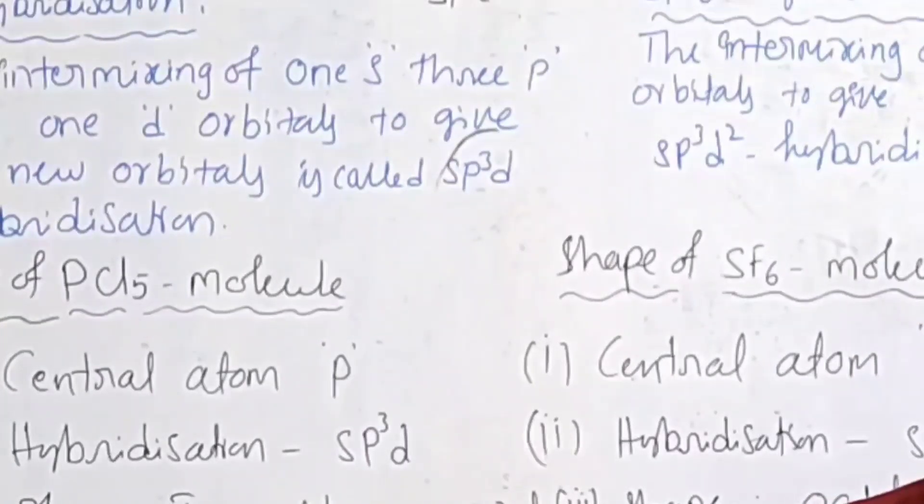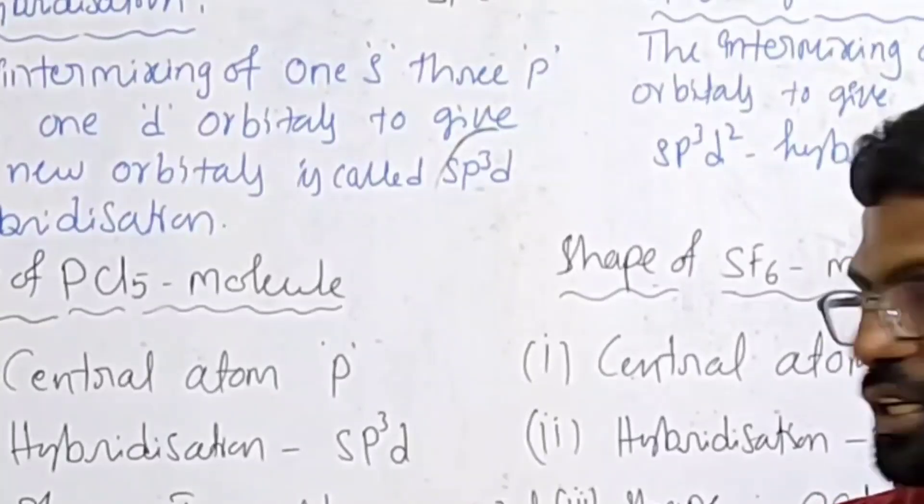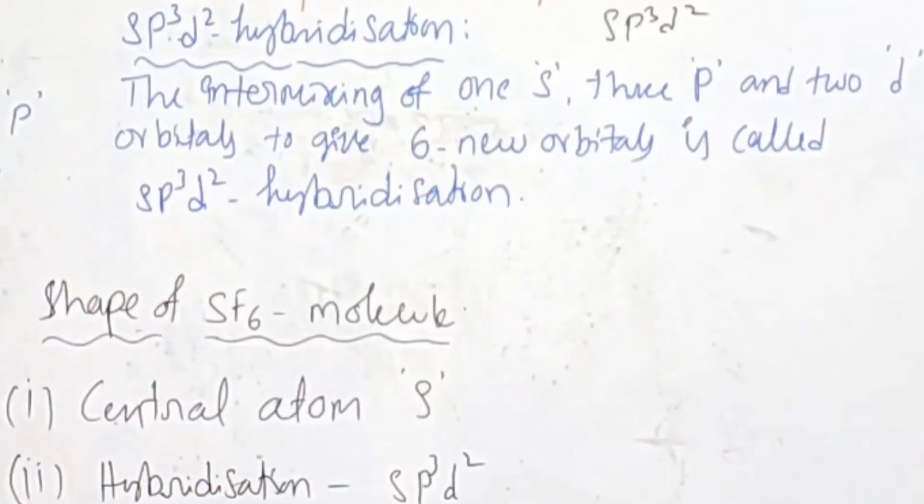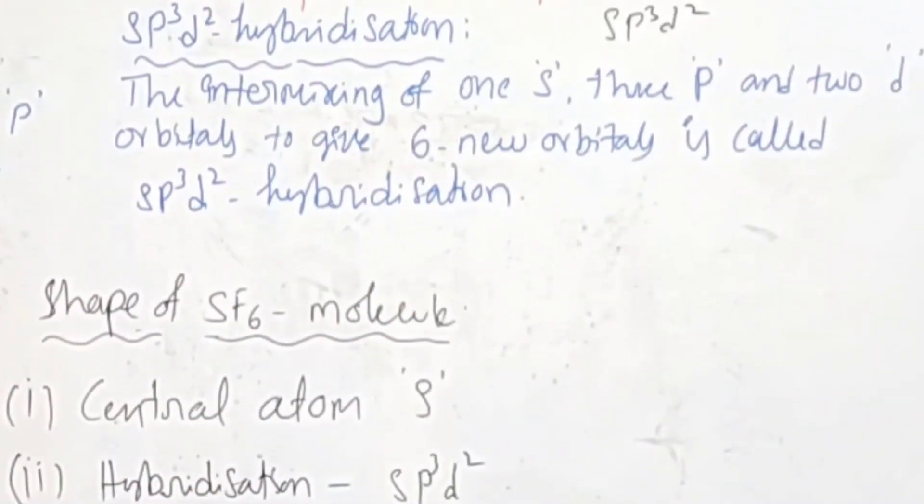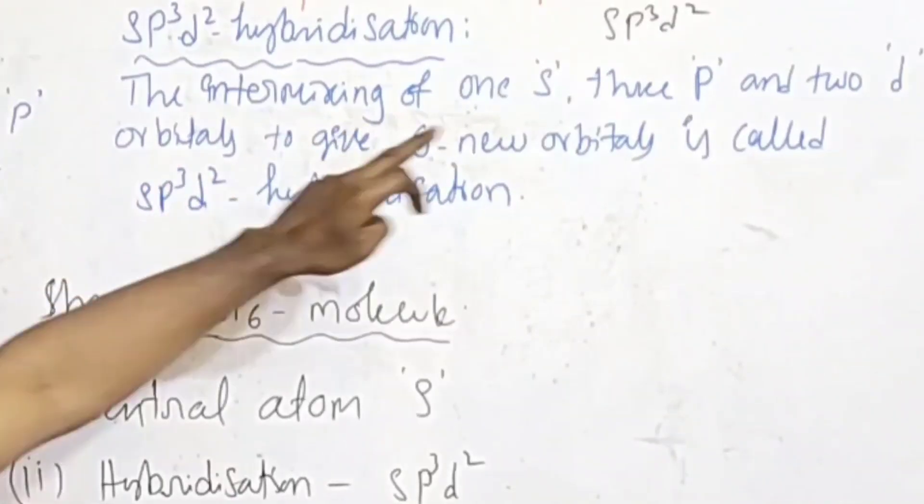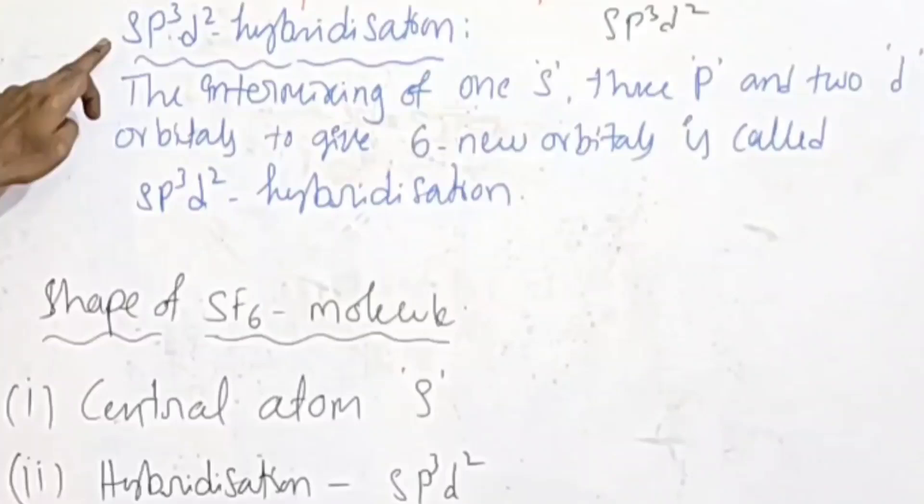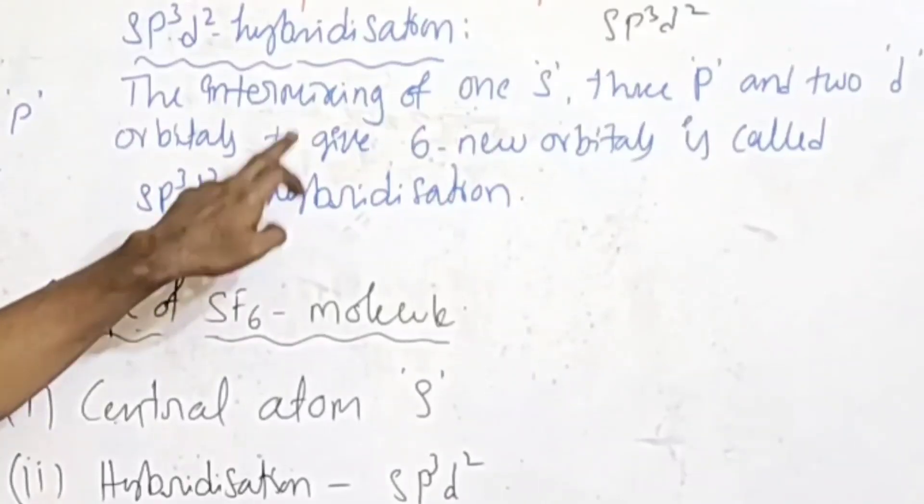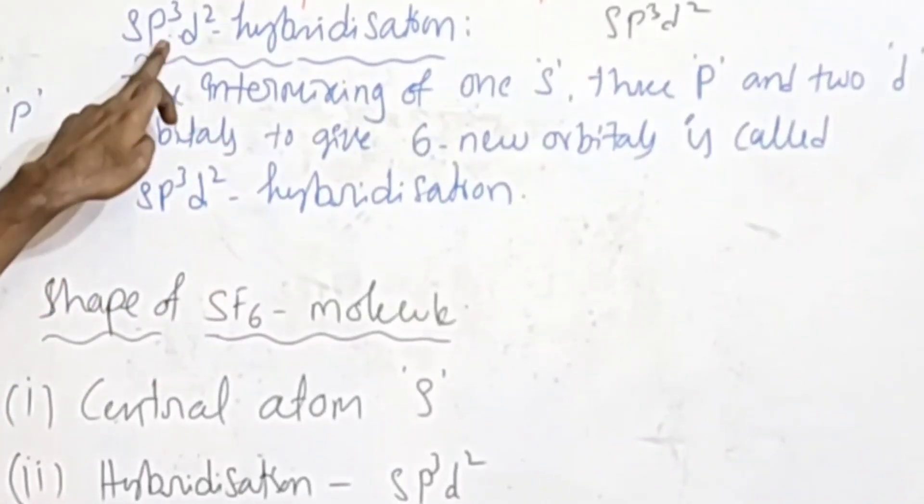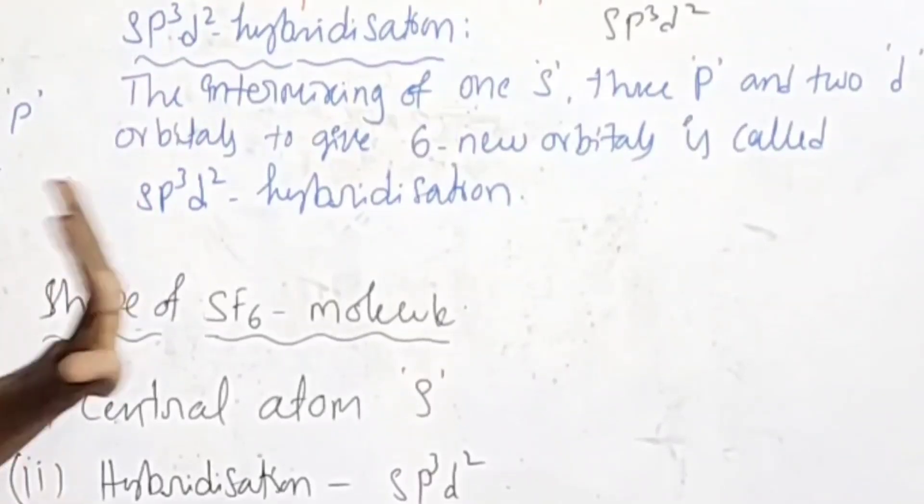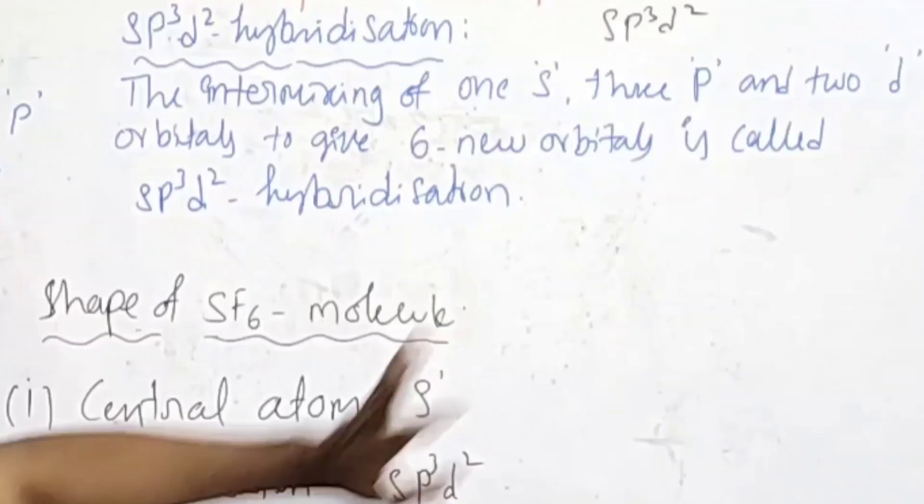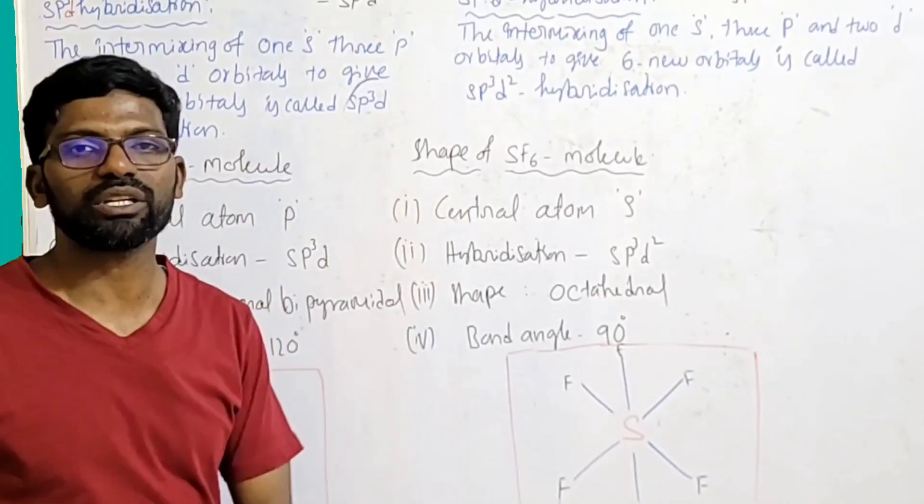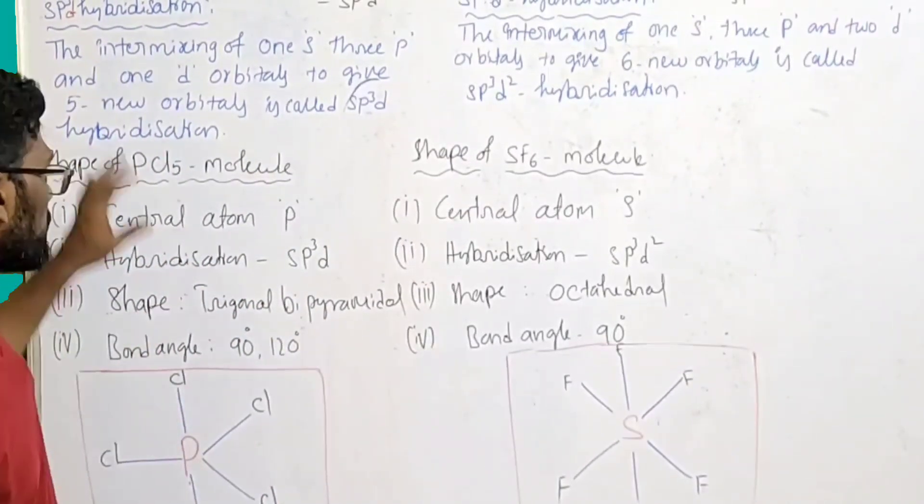If you write sp3d1 hybridization, the definition is the same. For sp3d2 hybridization, there's a small difference - here we have one d orbital, but there we have two d orbitals. The intermixing of one s orbital, 3p orbitals, and 2d orbitals - total six orbitals - to give six new orbitals is called sp3d2 hybridization.